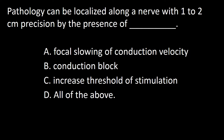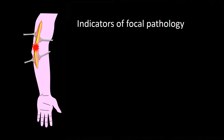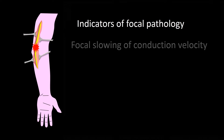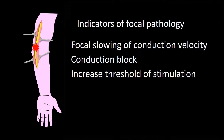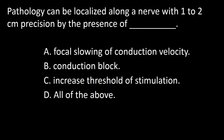Pathology can be localized along a nerve with one to two centimeter precision by the presence of A: focal slowing of conduction velocity, B: conduction block, C: increased threshold of stimulation, D: all of the above. Indicators of focal pathology include focal slowing of conduction velocity, conduction block, increased threshold of stimulation, and failure of the nerve to respond to stimulation. So the answer to this question is D.